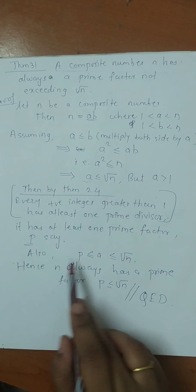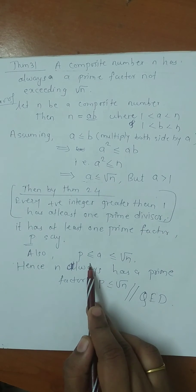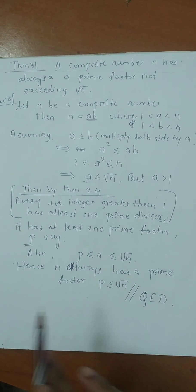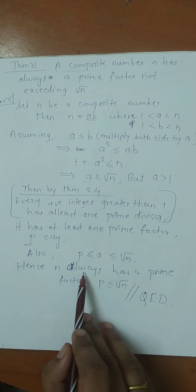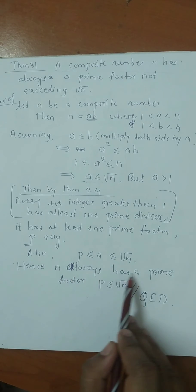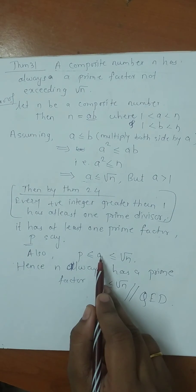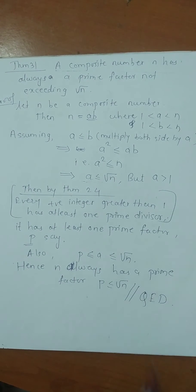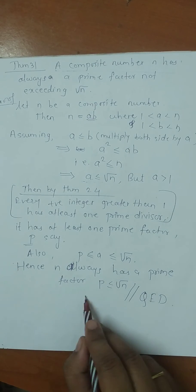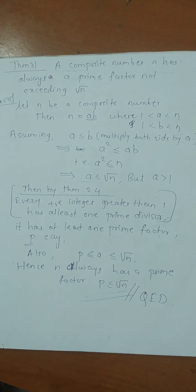So we can say that p is less than or equal to a is less than or equal to root n. Yes. And n always has a prime factor. So p is less than or equal to a is less than or equal to root n. So we can say that p is less than or equal to root n. And hence we proved by theorem number 24 of this book. Yes. Thank you.